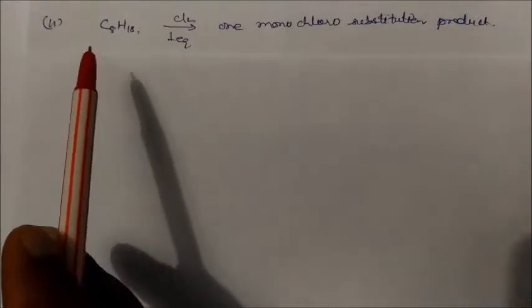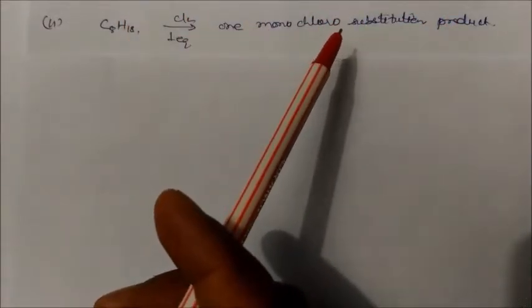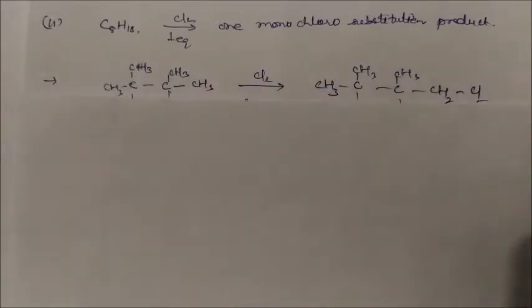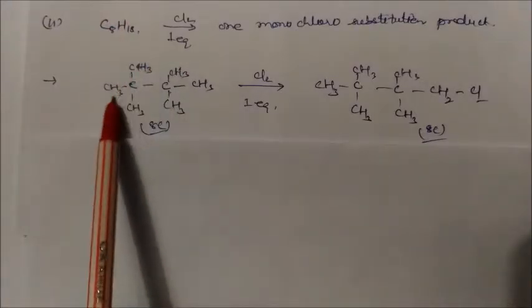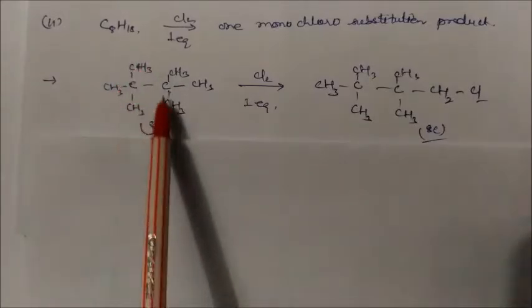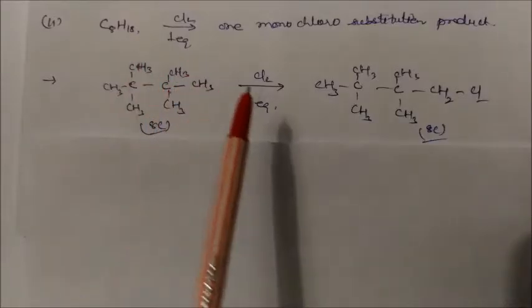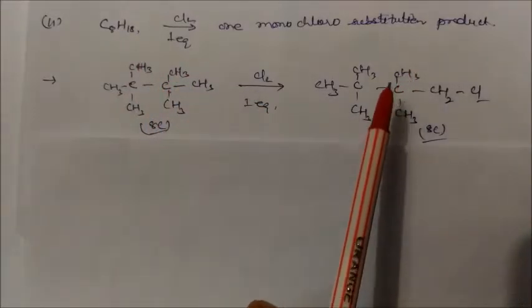Consider a compound C8H18, which is an octane. On chlorination with one equivalent of chlorine, only one product is formed — one monochloro substitution product. To identify this compound, you must arrange the octane structure such that only one product is possible. The structure has two quaternary carbons and primary carbons, so with one equivalent of chlorine only one monochloro product is obtained.